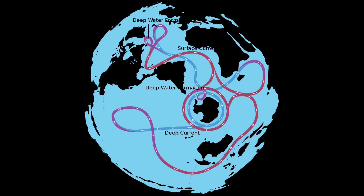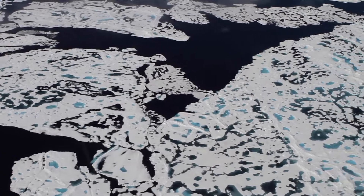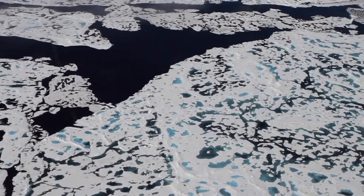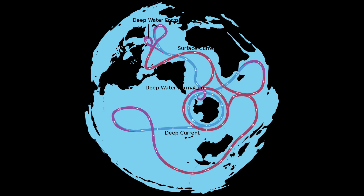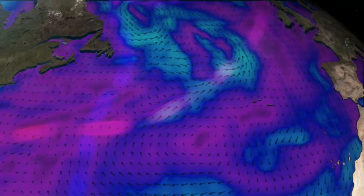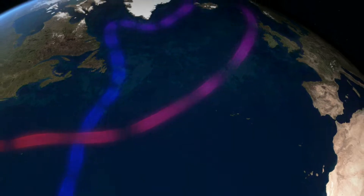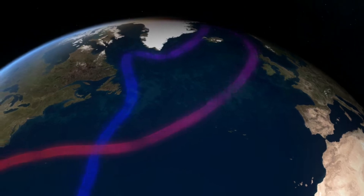The Gulf Stream brings warmer temperatures and more rain to Europe, making its climate more temperate and warmer than other places at similar latitudes. When it reaches cold northern regions, the water cools down. Ice starts forming in winter, which increases salinity because salt is not incorporated into the ice - it is left on the surface of the ocean. As a result, colder and saltier water becomes denser and sinks towards the bottom.